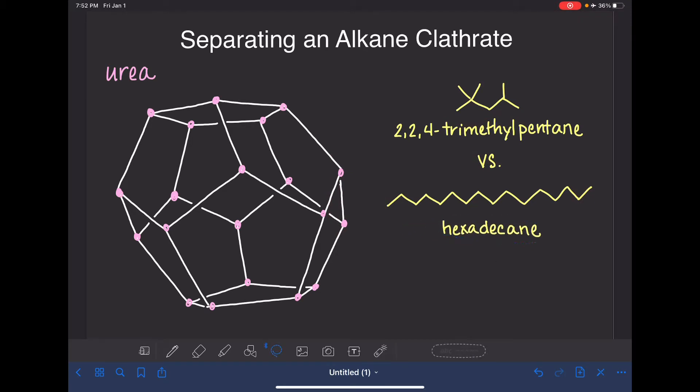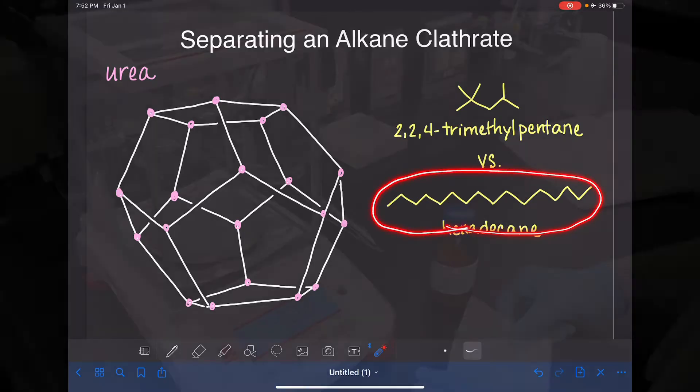As I said, in this experiment we're going to take these two different types of alkanes, we're going to mix them together in a combined solution, and then we're going to make the urea clathrate and we're going to see if the urea clathrate traps the 2,2,4-trimethylpentane or if it traps the hexadecane. Let's watch.